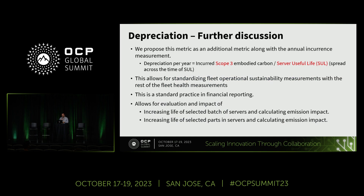On depreciation: the depreciation per year is incurred scope 3 embodied carbon divided by the useful life of that device — it could be a component, a server, or a rack. This allows for standardizing fleet operational metrics, which is actually a standard practice in financial reporting. Depreciation allows you to showcase how your expense looks on a predictable basis. The same thing can be applied to carbon assets you accumulate. This allows evaluation of increasing the life of a selected batch of servers and asking what is the value from a carbon perspective, and you can also do reusing or recycling of parts and compute the same emission impact.